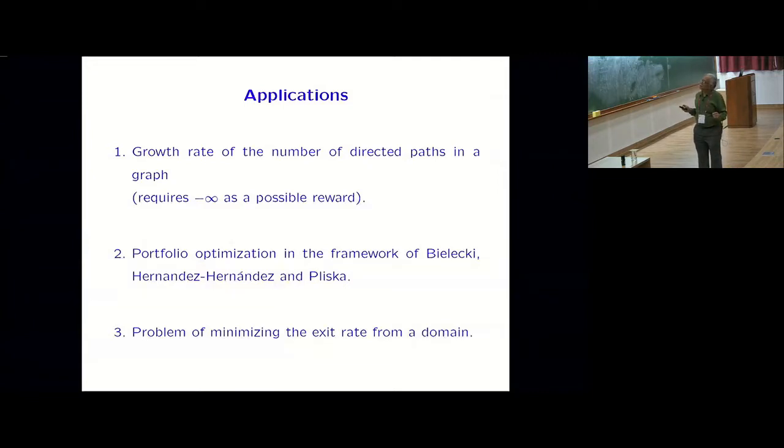This is the problem. Venkat pulled out an exercise from Cover and Thomas book on information theory, which looks for growth rate for number of directed paths in a graph. That's where you need minus infinity as a reward. But now he has some idea about it's useful in coding theory. I have no clue. I won't talk about it. Anyway, the proposal of optimization problems - one of the early works in this maximization of exponential rewards was by Tom Cover, and it appears as a chapter in his book.